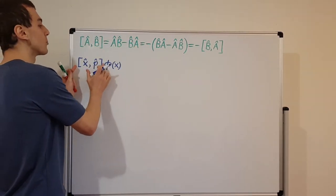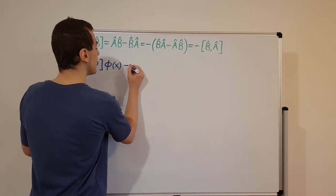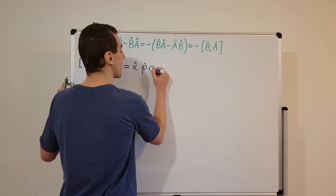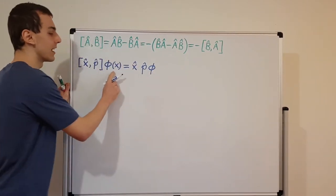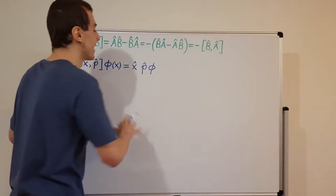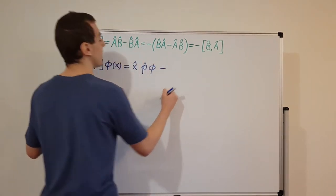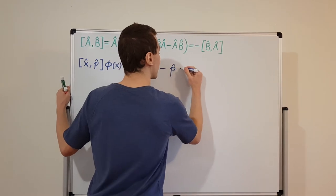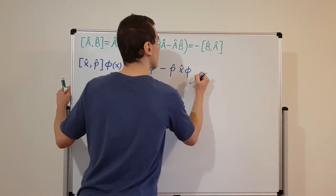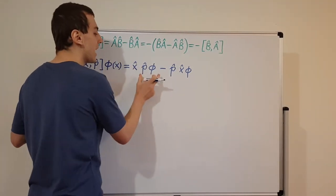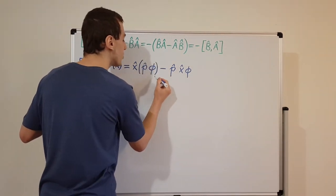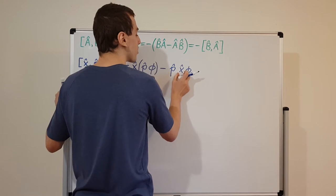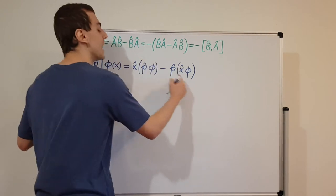Using the commutator definition acting on phi, we first have x-hat times p-hat acting on phi, then subtract the reversed order: p-hat times x-hat acting on phi. This first term means we apply the momentum operator first and then the position operator, while the second term means we apply the position operator first and then the momentum operator.